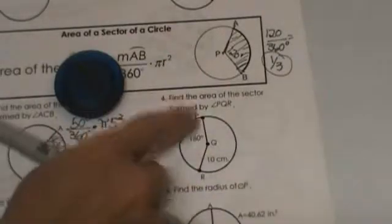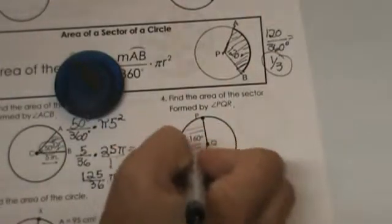Find the area of the sector formed by PQR. So another very straightforward problem.